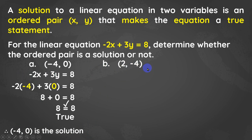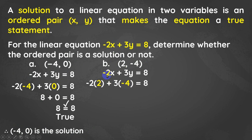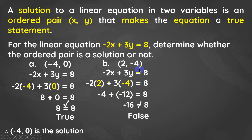Let's try the ordered pair positive 2 and negative 4. Positive 2 is the x-coordinate and negative 4 is the y-coordinate. Negative 2 times positive 2 plus 3 times negative 4 is it equal to 8? We get negative 4 plus negative 12, which equals negative 16, and that is not equal to positive 8. So the ordered pair 2 and negative 4 is not a solution for the given equation.